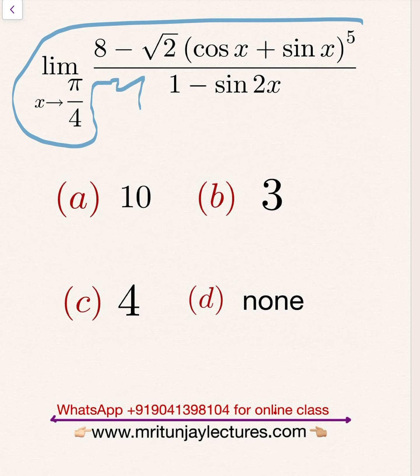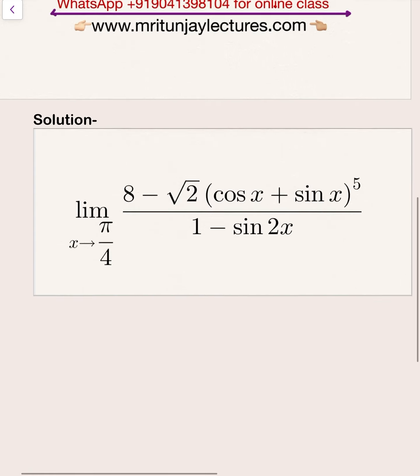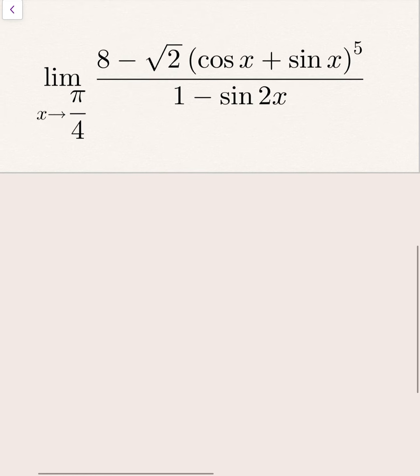Now question of the day: limit x tends to pi by 4, 8 minus root 2 into cos x plus sin x to whole power 5, divided by 1 minus sin 2x. So we need to determine that value. How can we determine?